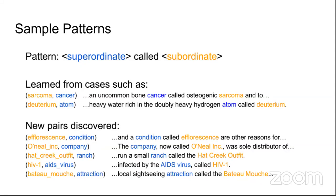Sample patterns from a distant supervision dataset: sarcoma and cancer are related because 'an uncommon bone cancer called osteogenic sarcoma…'; deuterium and atom are connected. The hypothesis is that if two entities have a relation, that relationship is inherent in any sentence containing them. New pairs discoverable from this approach include: Hat Creek Outfit is a ranch, HIV-1 is the AIDS virus, Bettymush is an attraction.